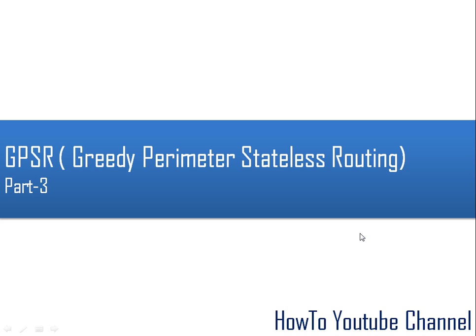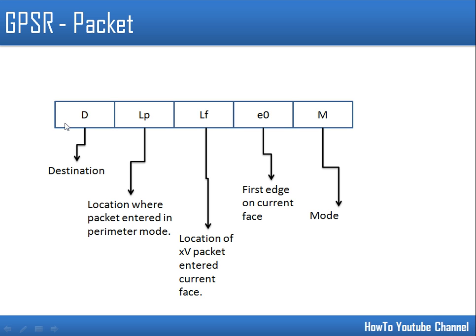In this video I will show you an example of GPSR. The GPSR packet structure has the following fields: the first field carries the destination, the second field carries the point where greedy forwarding failed, the third field is the point on the perimeter where the packet entered the current face, and e0 is the first edge on the current face.